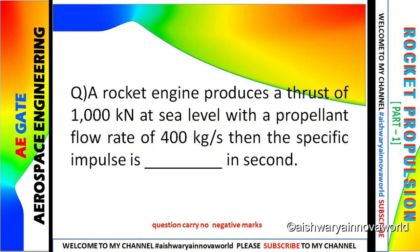Let's go to the next problem. A rocket engine produces a thrust of 1 kN at sea level with propellant flow rate of 400 kg per second. Then the specific impulse is dash in seconds. Now what things have been given? Thrust has been given and the propellant flow rate M dot has been given. What you have to find is specific impulse. This question carries one mark and since no option it carries no negative mark.